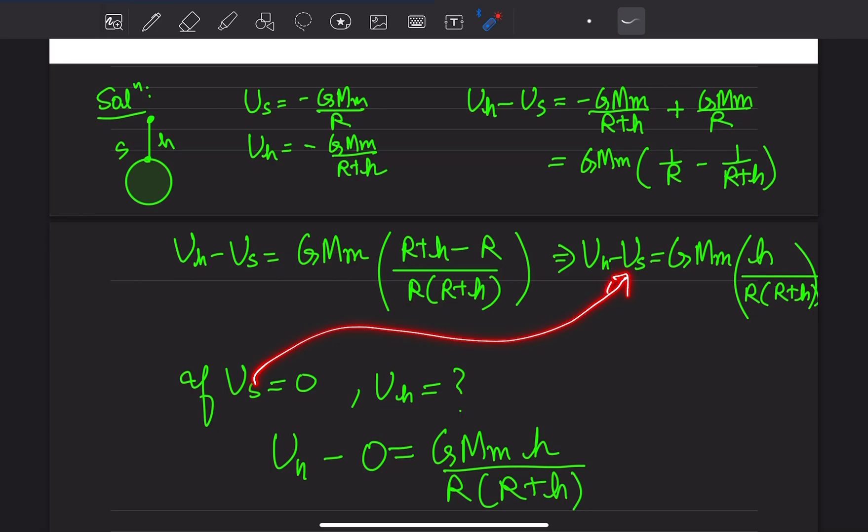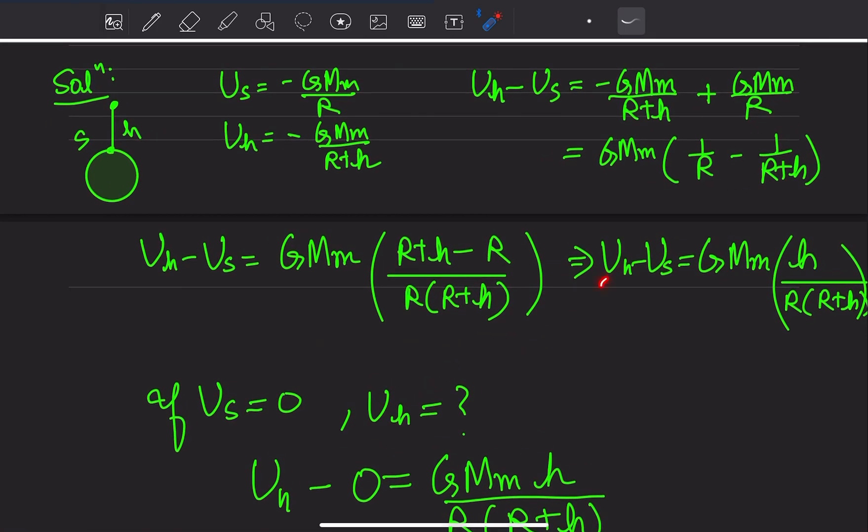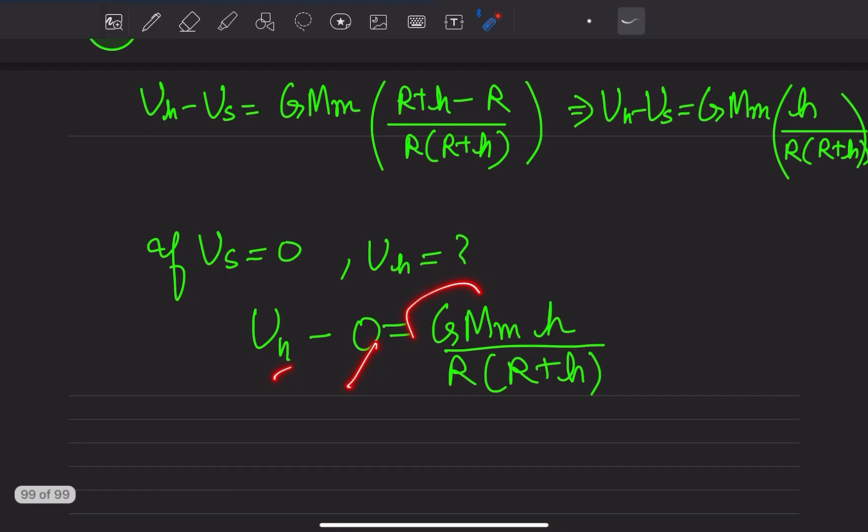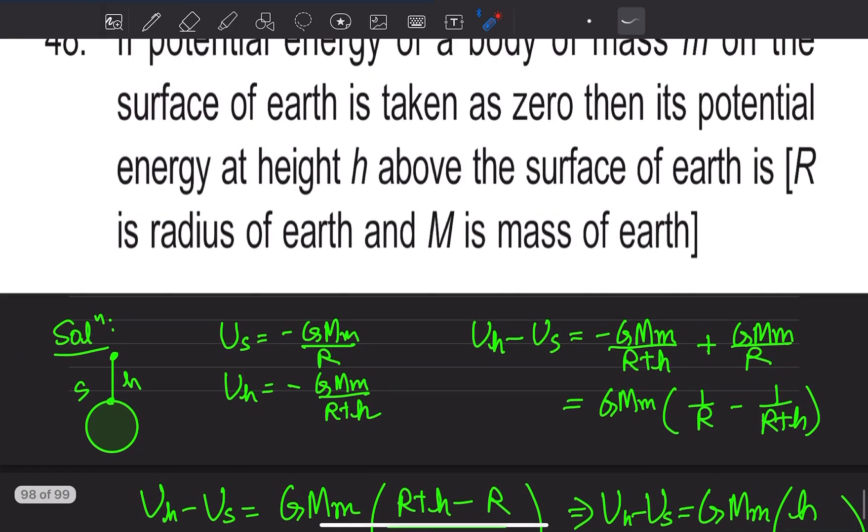तो अगर surface पे zero हो जाए, तो यहाँ पे zero डालो. H पे आ जाएगी. Zero डाल देंगे, तो h पे कितनी होगी? इतनी आएगा answer: GMm h upon R plus h. This will be the answer.